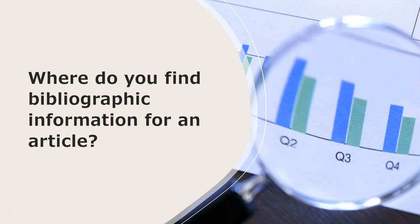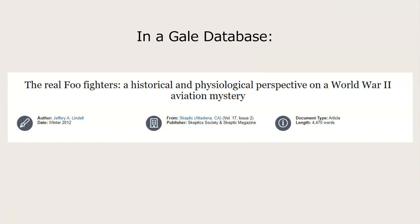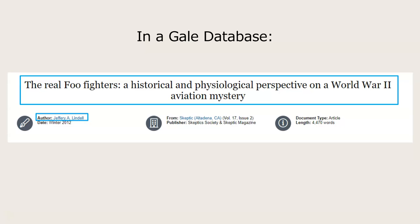So where do you find bibliographic information for an article? There are a few places to find an article's information. If you're using one of our Gale databases, you'll find the information at the top of the article's page. You can see the author's name, the article title, the journal title with volume and issue number, and the date of publication.